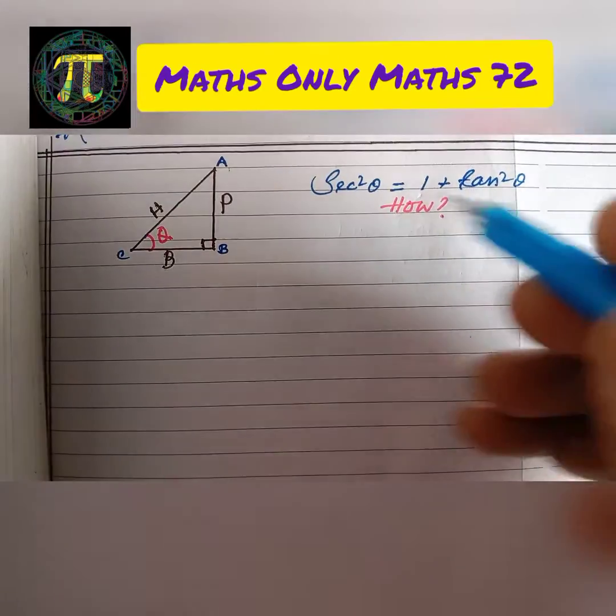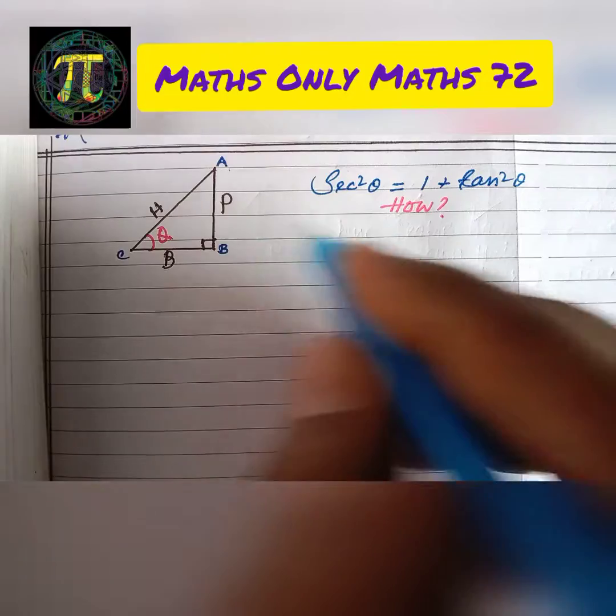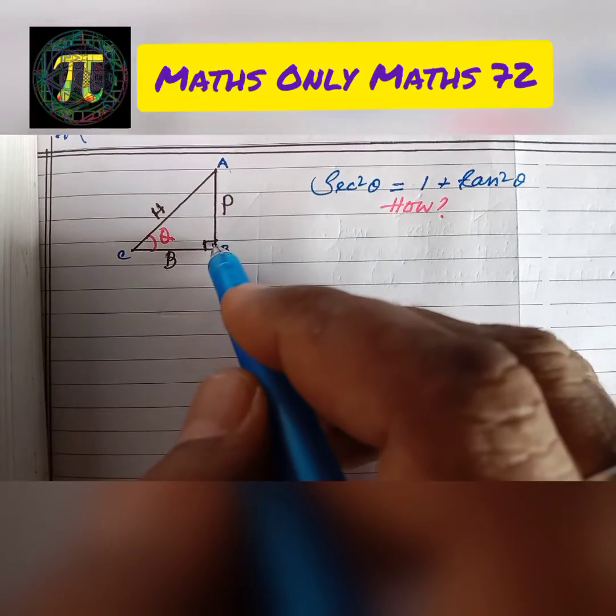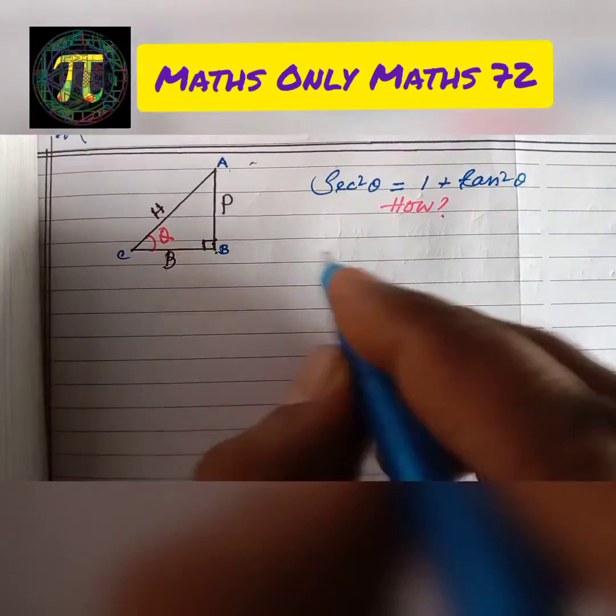In right angle triangle, according to Pythagoras theorem, perpendicular squared plus base squared equals hypotenuse squared.